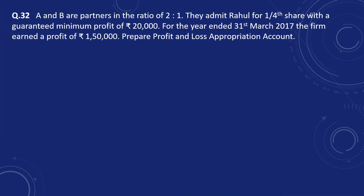Question number 32. A and B are partners in the ratio 2:1. They admit Rahul for 1/4th share with a guaranteed minimum profit of Rs. 20,000 for the year ended 31st March 2017. The firm earned a profit of Rs. 1,50,000. Prepare the Profit and Loss Appropriation Account.